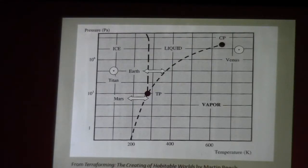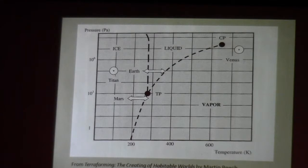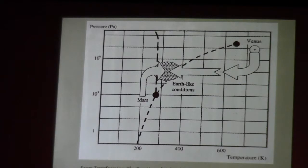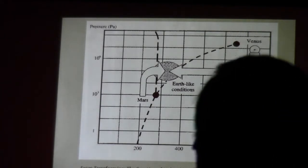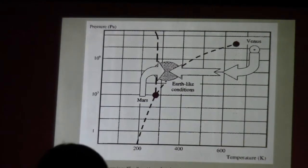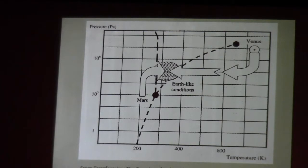This is the water phase diagram showing where Earth sits, and up in the corners you have Venus and Mars and Titan — it shows how the different temperatures and pressures vary. To terraform Mars, you have to increase pressure and increase temperature. To terraform Venus, you have to decrease temperature and decrease pressure to bring it within Earth normal conditions.